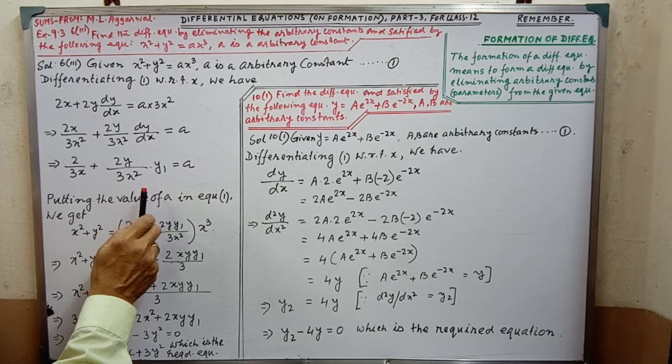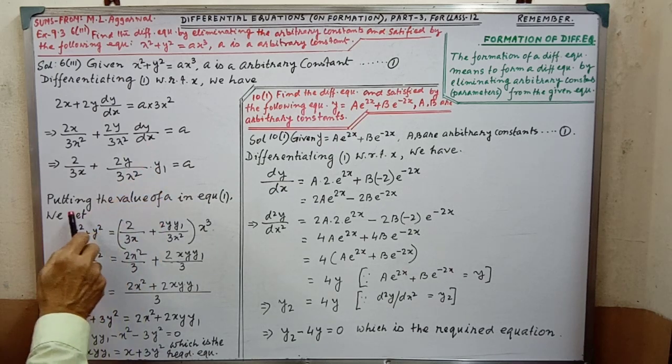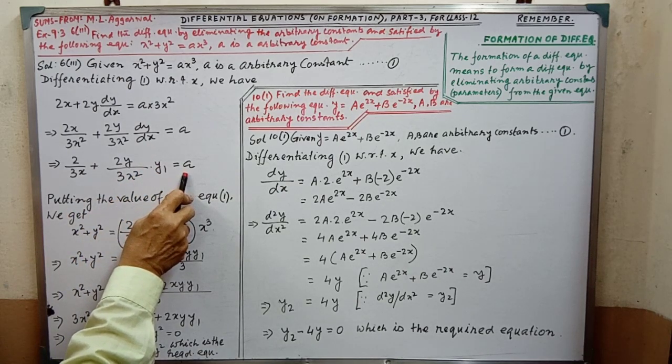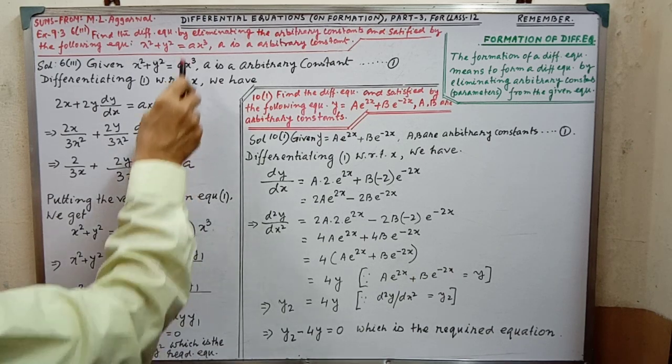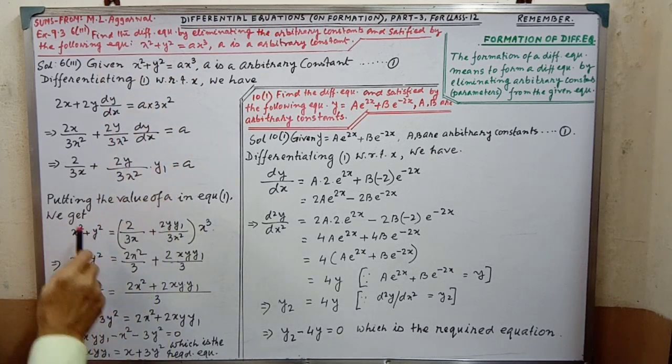By simplifying, we are getting the value of a. This arbitrary constant we have to substitute in this expression. So, putting the value of a in the equation 1.